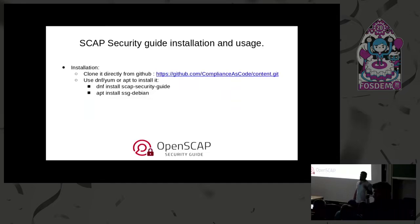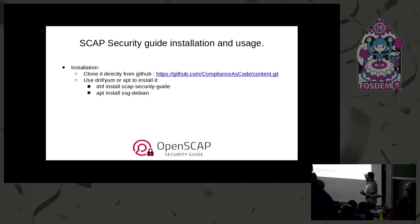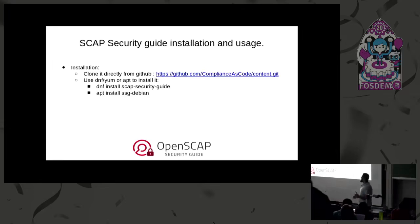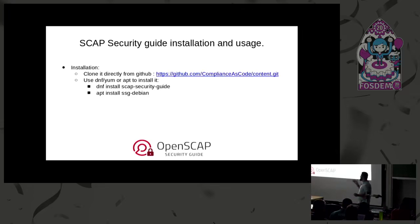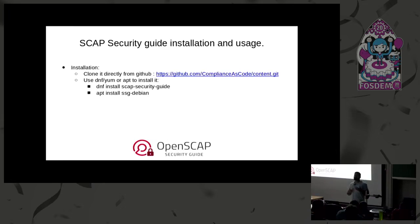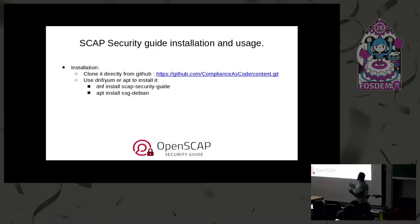How can you get the SCAP Security Guide on your system? You can clone the Git repository and have it on your system or multiple systems, or if you want to just go with package installation like DNF install or APT install, that is also possible. SCAP is a very good example of compliance as code — the content is written in human-readable format, so even if you're not deep into SCAP development, you should be able to understand what has been written and what it will do.